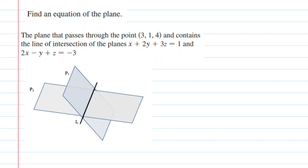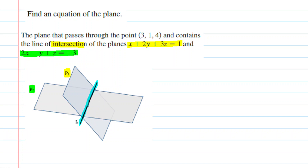In this question there's a lot going on, but let's take a look at the two planes that are intersecting. We have the first plane given by this equation, which we have drawn here and labeled P1, and then we have the second plane given by this equation, labeled P2. These two planes are crossing each other, and they cross to form a line of intersection.